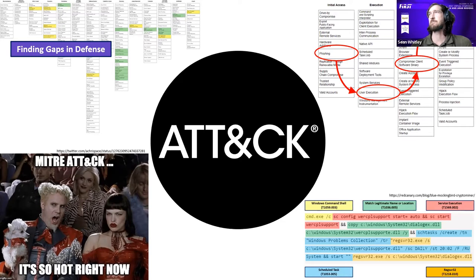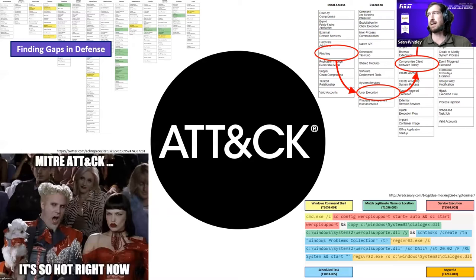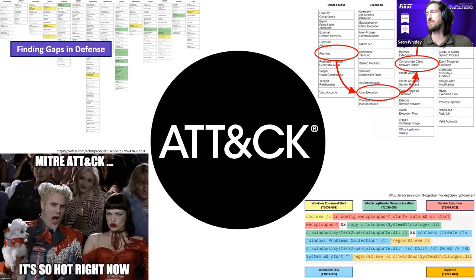ATT&CK is a framework we shared with the cybersecurity community about seven years ago. Since that time, it's been gaining more and more popularity as a way of talking about adversary activity. The way different teams use it varies, but that's part of the power of the framework — it is not stuck in one particular use case. We usually talk about four use cases, which we'll get into later.